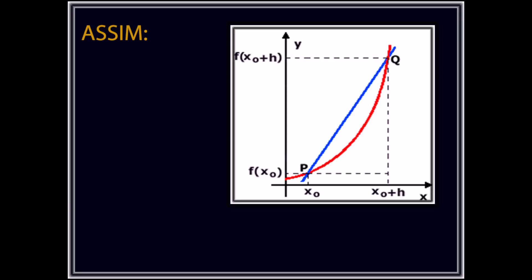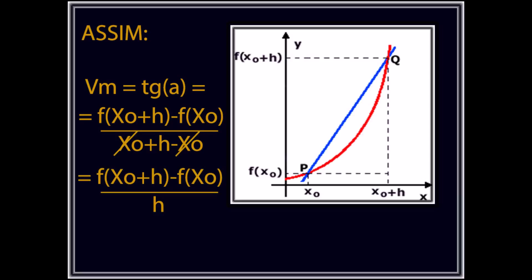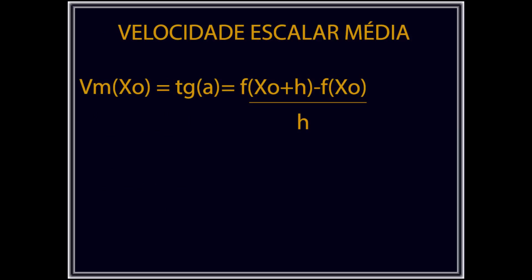Assim, uma relação cartesiana do espaço em y em função do tempo em x resulta na curva da velocidade, e a reta secante PQ determina a velocidade escalar média durante a trajetória, sendo novamente o cálculo do coeficiente angular a representação matemática da equação da reta secante PQ.